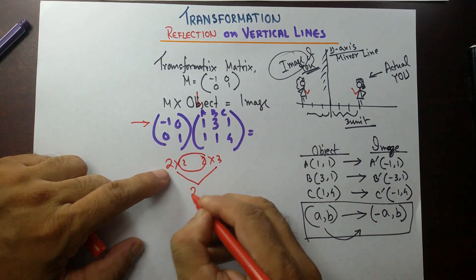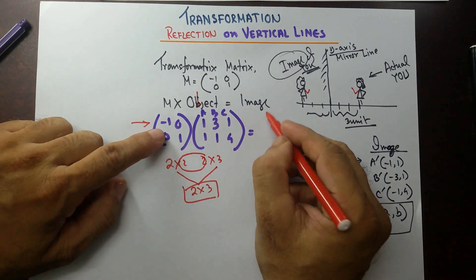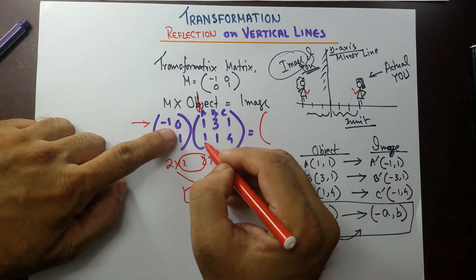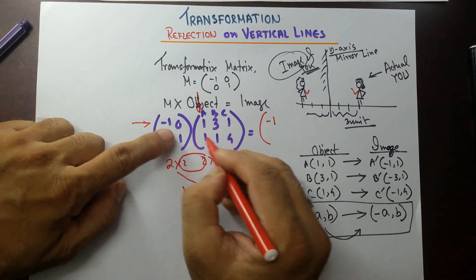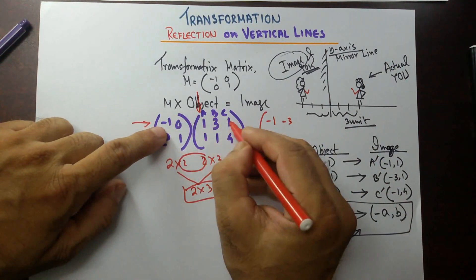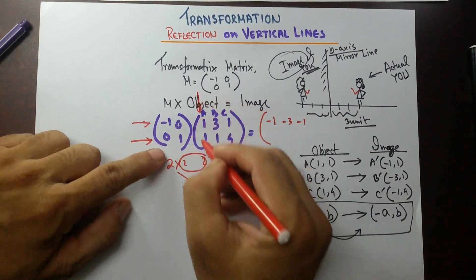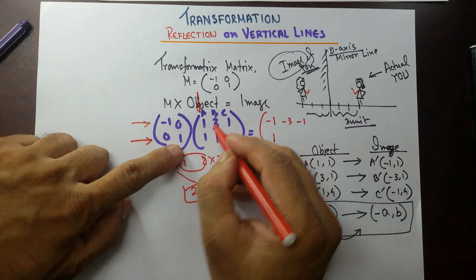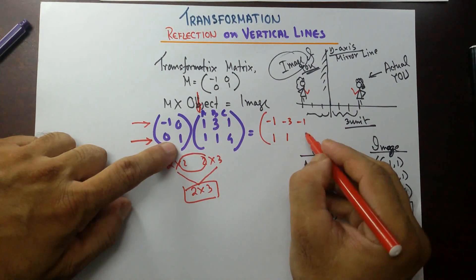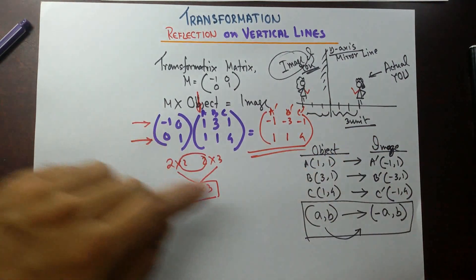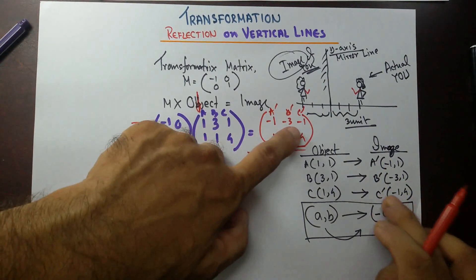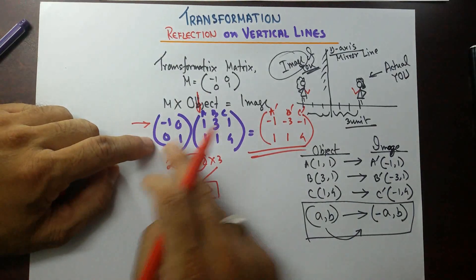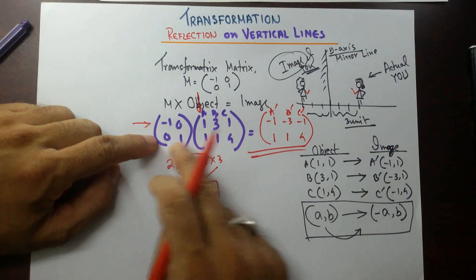Just multiply: -1 times 1 is -1, plus 0 times 1 is 0, so it's -1. All the x-row gives: -3 plus 0 is -3; -1 plus 0 is -1. Now the second row: 0 times 1 is 0, plus 1 times 1 is 1. 0 times 3 plus 1 times 1 is 1. 0 times 1 plus 1 times 4 is 4. So A prime, B prime, C prime — that's the image: (-1,1), (-3,1), (-1,4). This is how you get that. Either use the formula or use the transformation matrix to get the image.